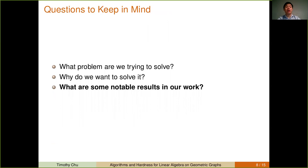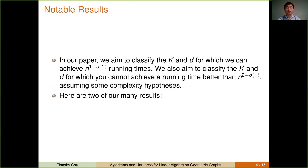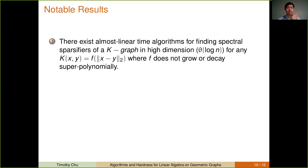Now we've addressed what our problem is and why we want to solve it. In this paper, we aim to classify the K and d for which we can find almost linear running times for the three problems. We also attempt to classify the K and d for which you cannot achieve a running time much better than quadratic, assuming some complexity hypotheses. We'll give two notable results: one algorithm result for spectral sparsifiers, and a hardness result for matrix-vector multiplication and Laplacian solve.